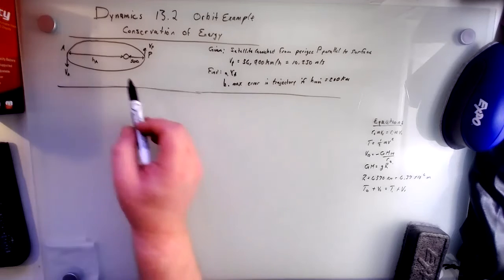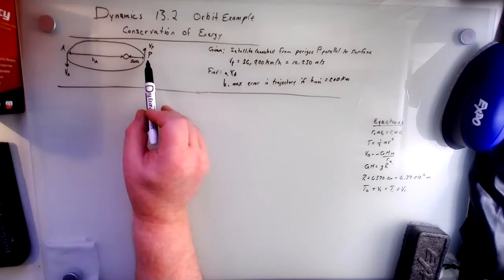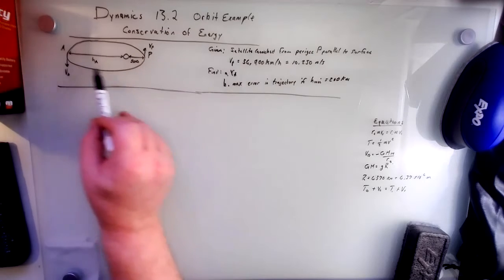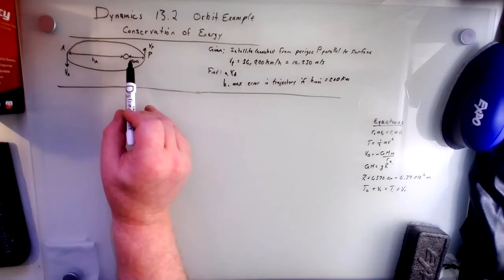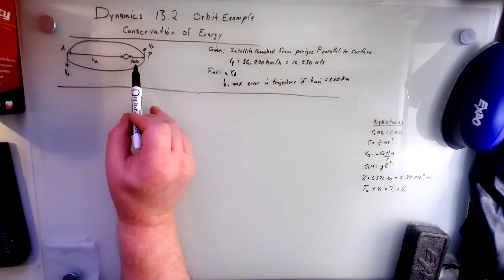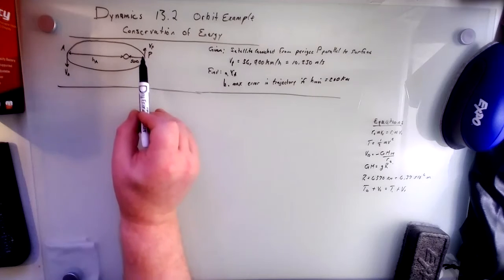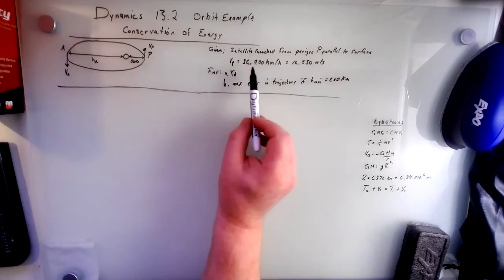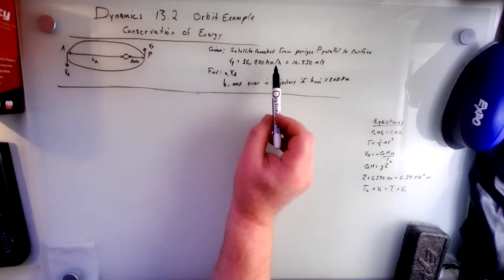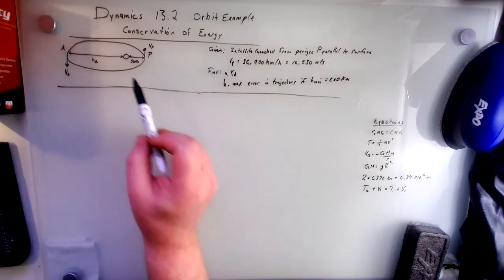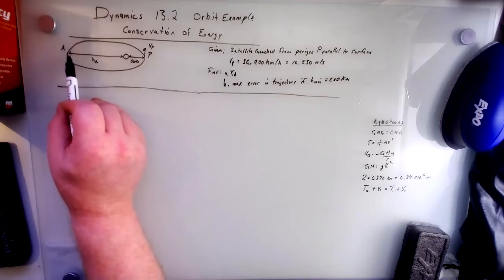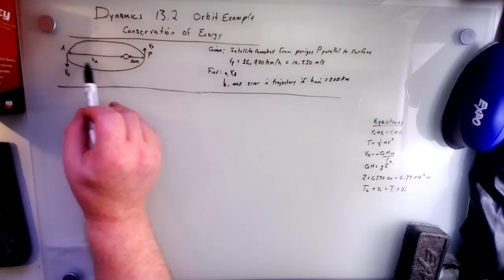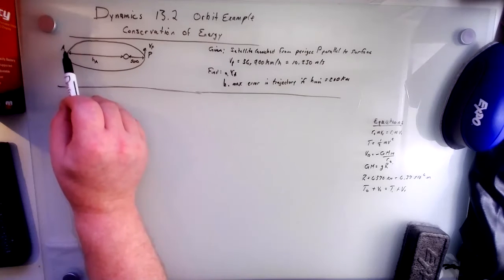So we're given that the satellite launches from the perigee of this orbital ellipse, and at the perigee, the height is 500 kilometers. It is launched at 36,900 kilometers per hour, and we are asked to find the max altitude, the height at the apogee at point A.